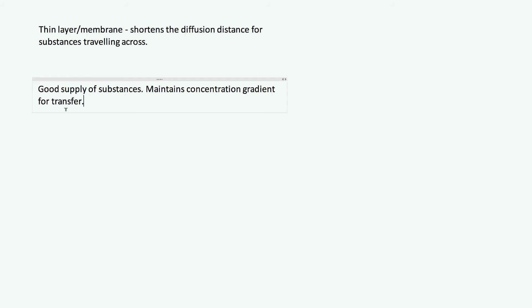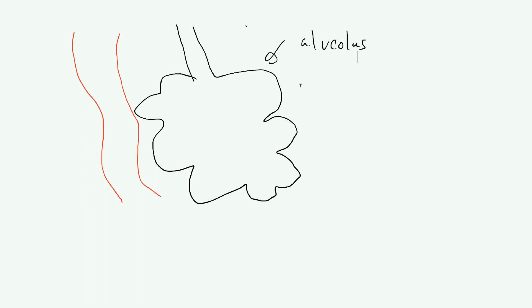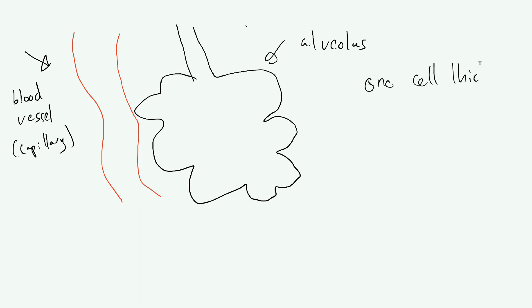Let's have a look at a couple of examples. The first is in the lungs — we have lungs in order to transfer oxygen and carbon dioxide with the atmosphere. This is a diagram of an alveolus — tiny little sacs found inside your lungs, of which there are millions. This here is a capillary, a blood vessel. Both the alveolus and the capillary are one cell thick. This means things can diffuse in and out very quickly because you have a short diffusion distance.